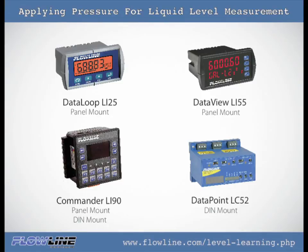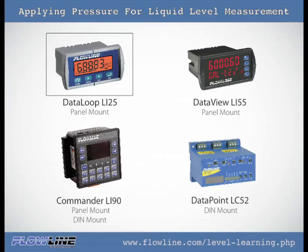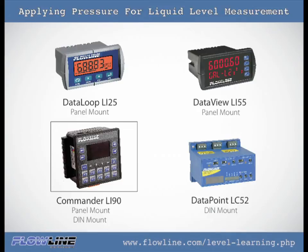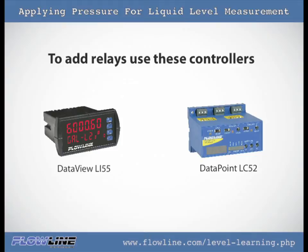Flowline pressure level transmitters work well with all Flowline displays that accept a 4-20 mA signal, such as the Dataloop LI25, Dataview LI55, Datapoint LC52, or the Commander LI90. Each of these displays can indicate the level of the liquid in the tank in engineering units. To add relays or a 4-20 mA repeater, choose the LI55 series or the LC52 controller as a solution.